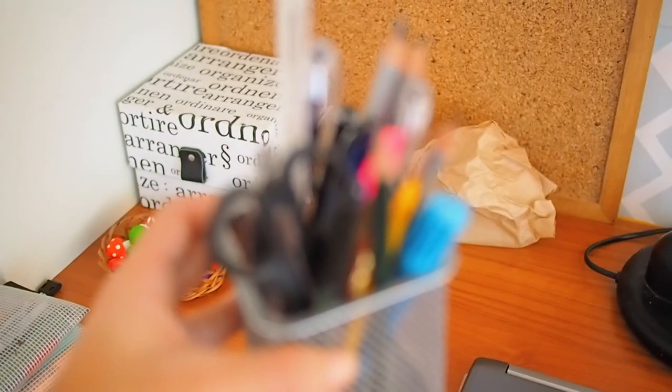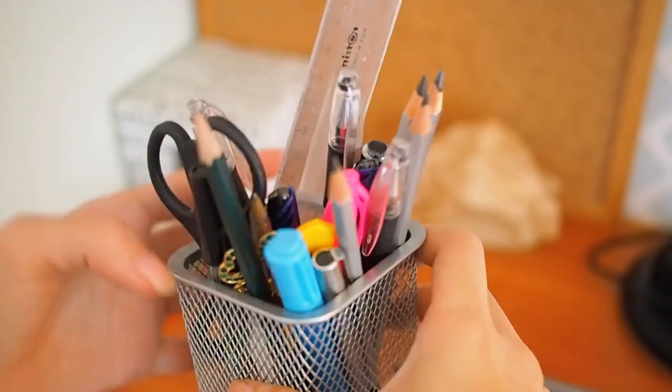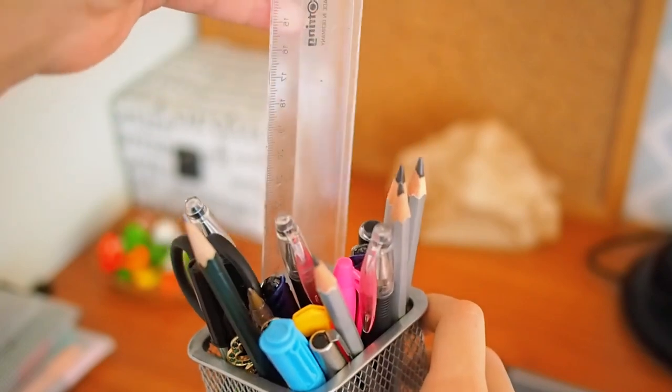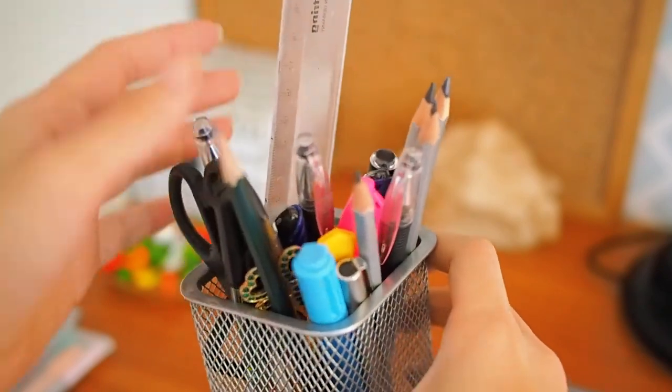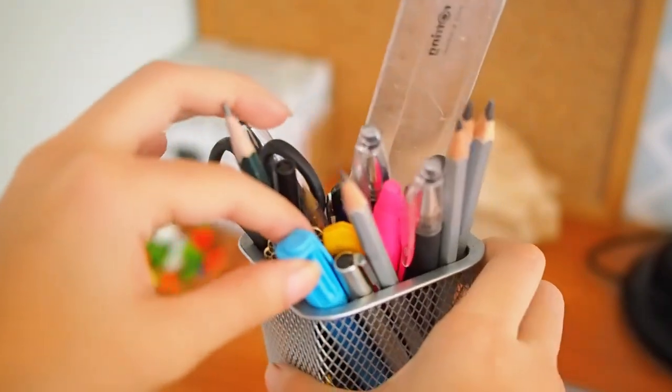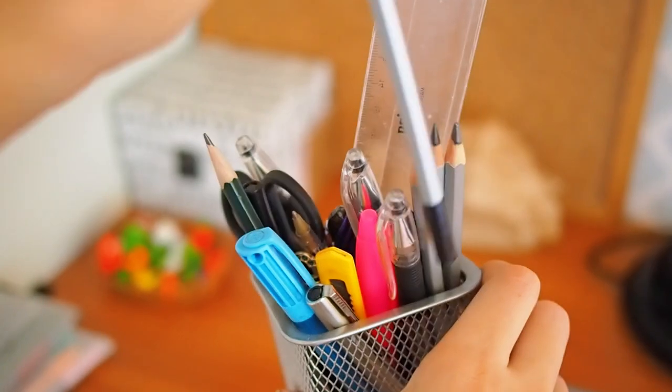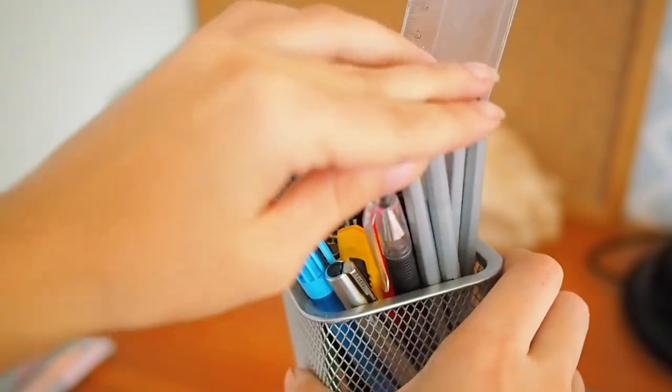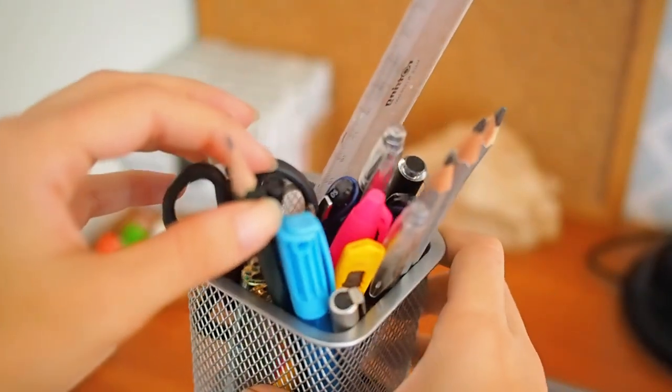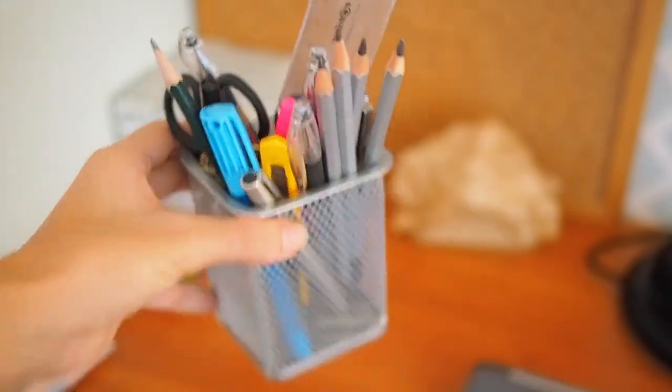Next up I have this pencil holder. Here I keep my ruler and also a couple of different pens and pencils, some scissors and highlighters, and my favorite art pencils. I just keep it on top of my table so I can grab anything I need quickly.